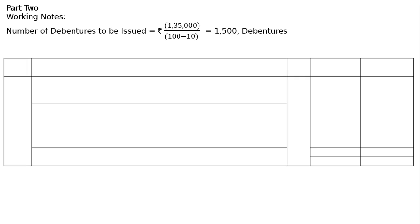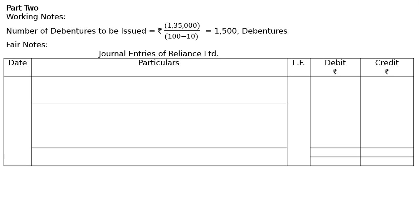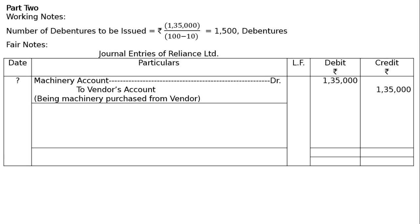Journal entries of Reliance Limited for Part 2. First, to record the purchase of the machine: Machinery Account debited to Vendor's Account, being machinery purchased from vendor. Rs. 1,35,000 in the debit and Rs. 1,35,000 in the credit.